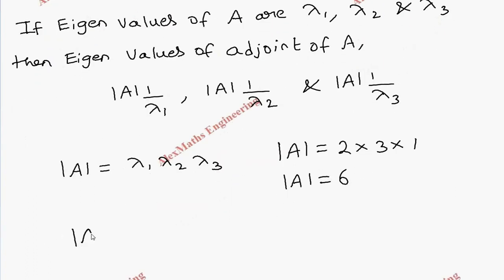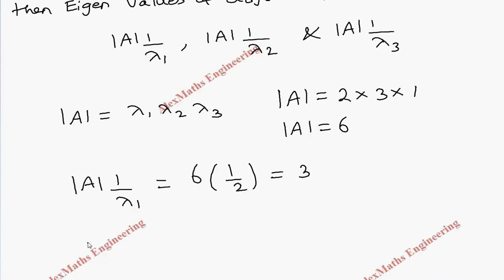Therefore, determinant A into 1 by lambda 1 value is 6 into 1 by 2, which is 3. Then determinant A into 1 by lambda 2 is 6 into 1 by 3, which is 2.